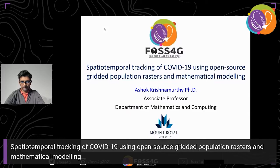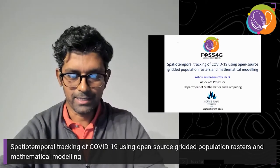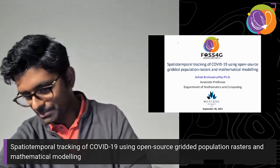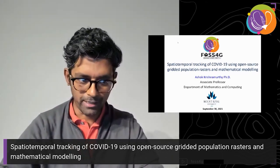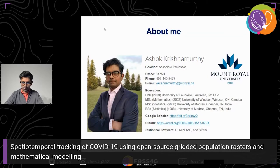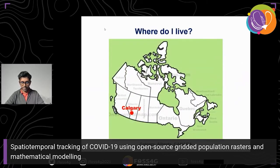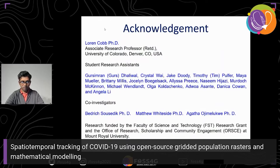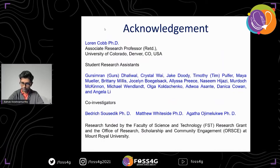Good morning everyone, this is Ashok from Calgary, Alberta, Canada. It's 7:30 a.m. for us and a cool eight degrees in the morning, so I'm sitting in my basement enjoying all the talks. FOSS4G has been really nice for the past three days. My background: I have a PhD from the University of Louisville in Kentucky in biostatistics, and my expertise is in mathematical modeling of infectious disease epidemics. I work at Mount Royal University in Calgary. I'd like to begin by acknowledging all my research collaborators and student research assistants who spent a lot of time on this project.